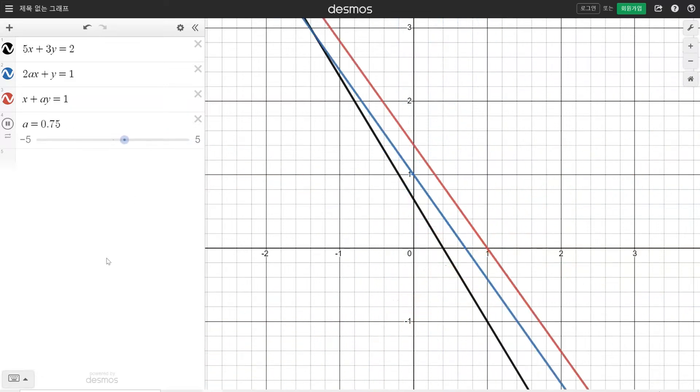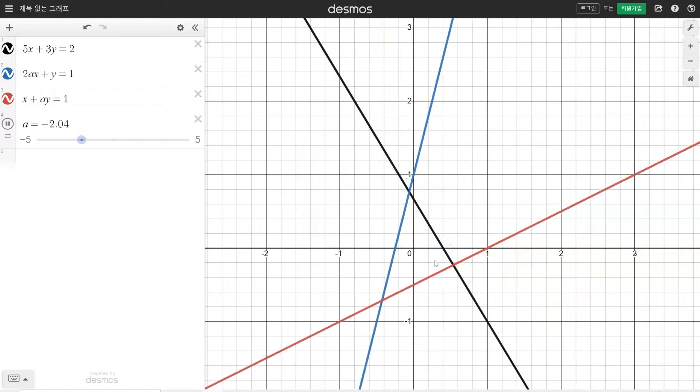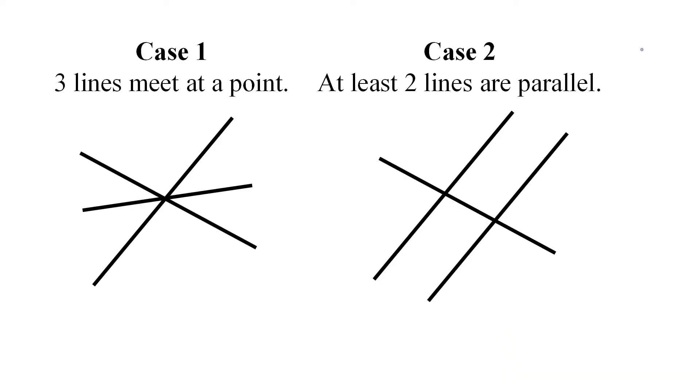So the first question we have to ask is this: When do these three lines not form a triangle, what is the relation between their positions? And there are two cases where three lines don't form a triangle. The first case is when three lines meet at a point, and second case is when at least two lines are parallel.